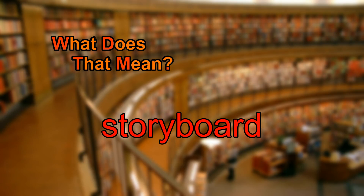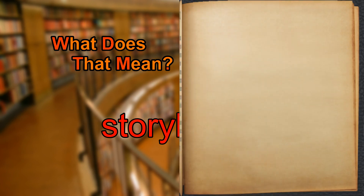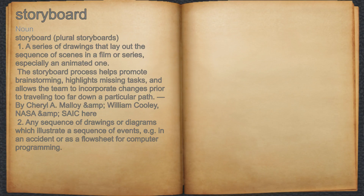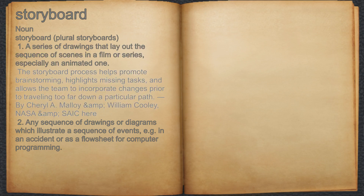What does storyboard mean? Storyboard. Noun. 1. A series of drawings that lay out the sequence of scenes in a film or series, especially an animated one. For example, the storyboard process helps promote brainstorming, highlights missing tasks, and allows the team to incorporate changes prior to traveling too far down a particular path.